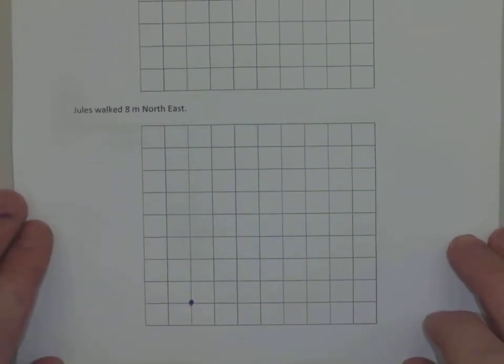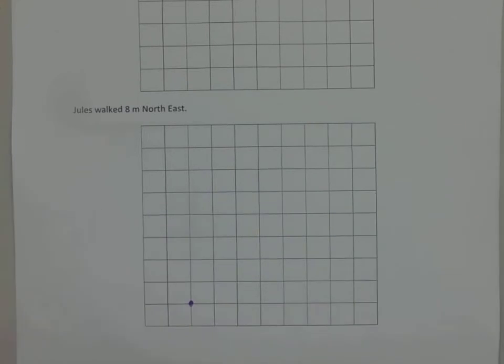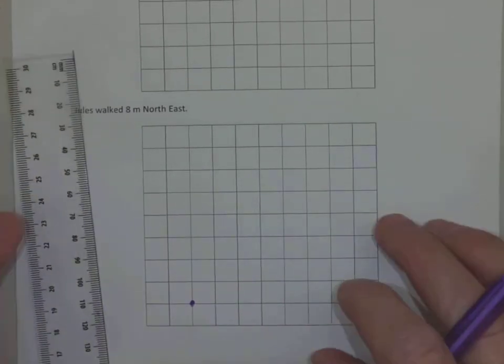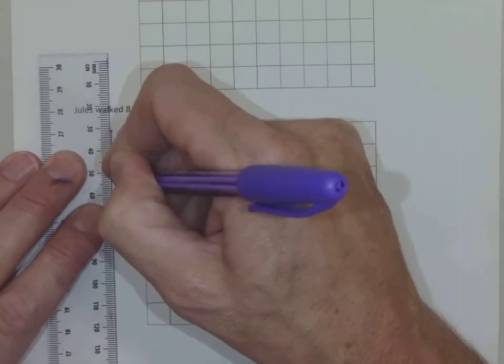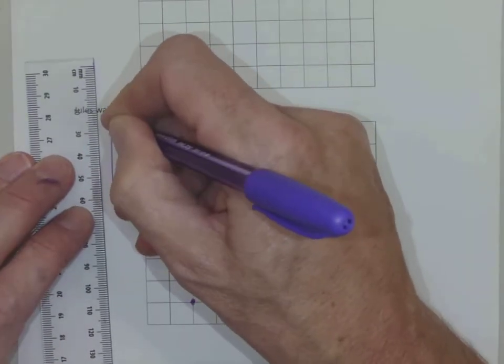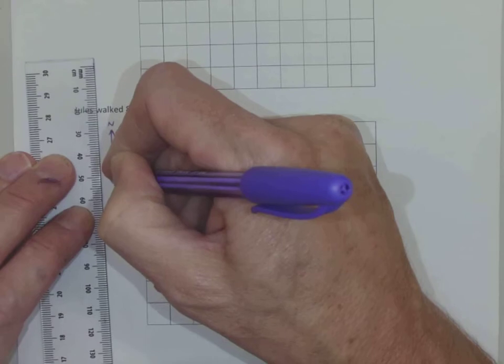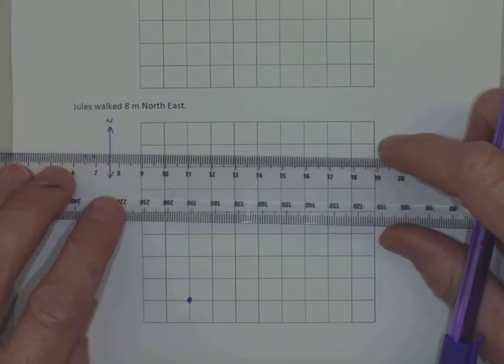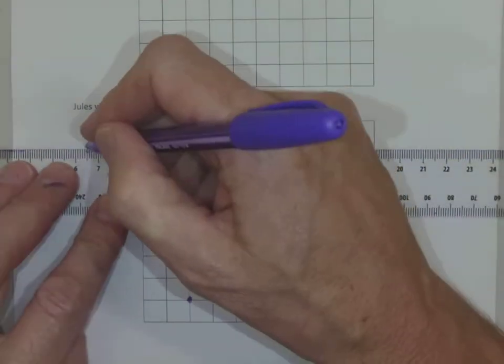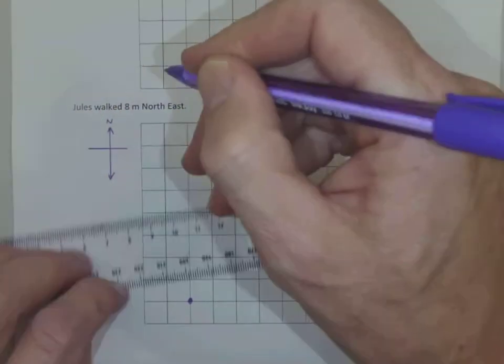Jules walked eight meters northeast. So we're going to need an orientation. And if we want to, we could draw our orientation with just the north or if we wanted to, we could draw our orientation with north, south, east, and west. That's up to us and what's most convenient.